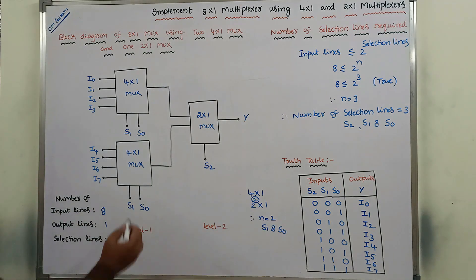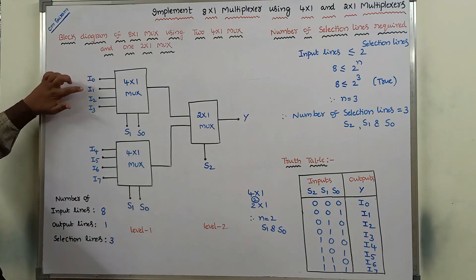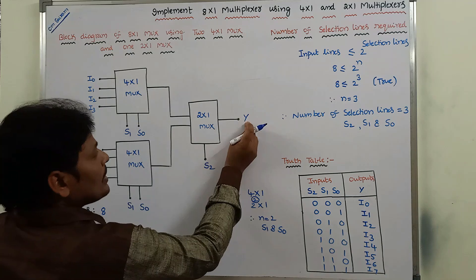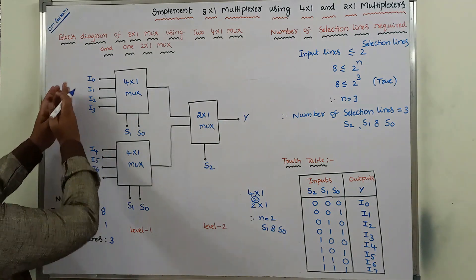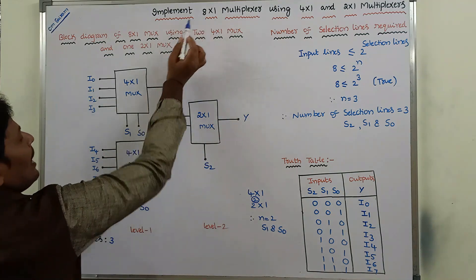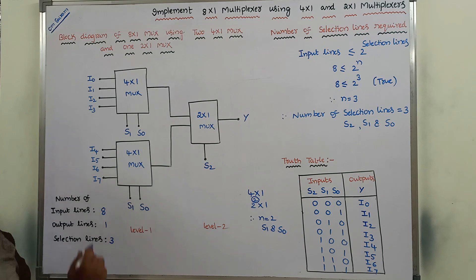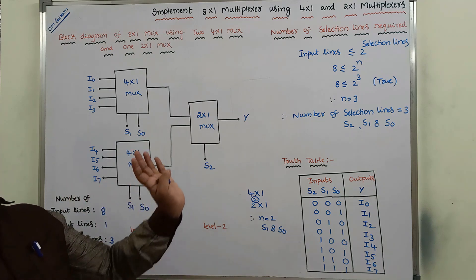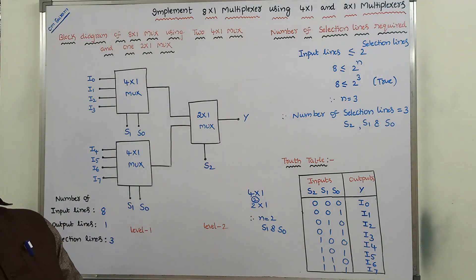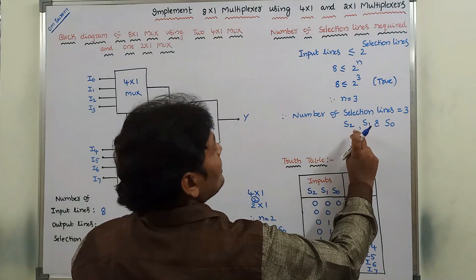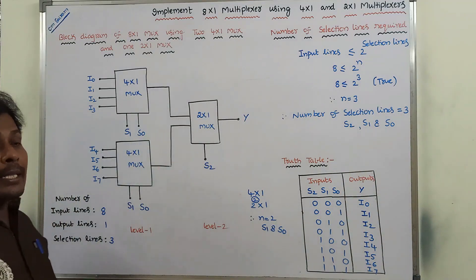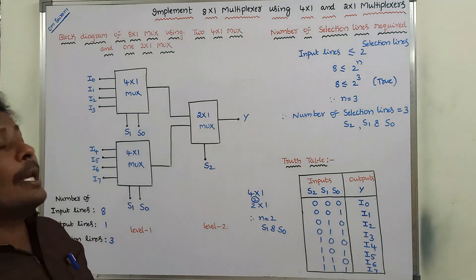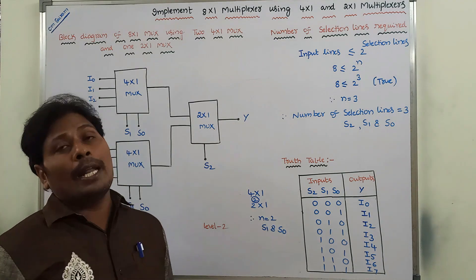The 2 by 1 multiplexer requires only 1 selection line, that is S2, to select one input among the two. So totally there are 8 inputs: I0, I1, I2, I3, I4, I5, I6, I7, and only 1 final output, giving us the 8 by 1 multiplexer. The 3 selection lines are S2, S1, and S0. S1 and S0 serve as selection inputs for level 1, and S2 is the selection input for level 2.